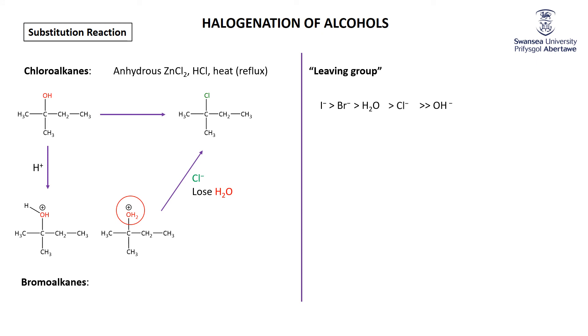To make bromoalkanes: you don't just use HBr directly. You make the HBr in situ by taking potassium bromide and reacting it with sulfuric acid to generate the HBr.